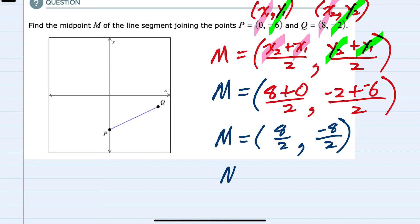So our midpoint is 8 over 2, which is 4, and negative 8 over 2, which is negative 4. The midpoint is at the coordinates (4, -4).